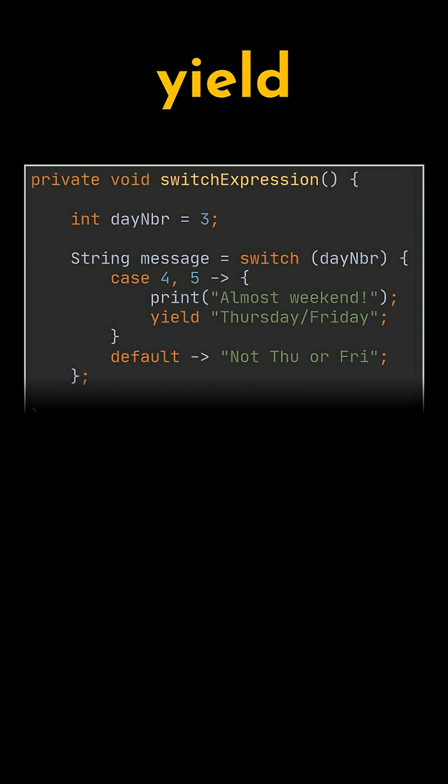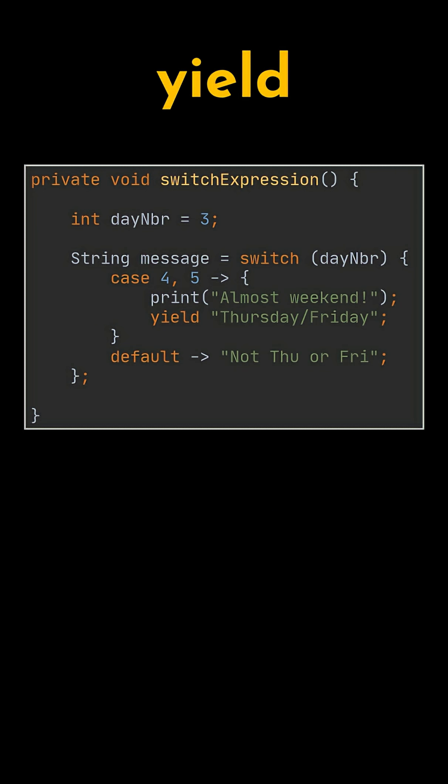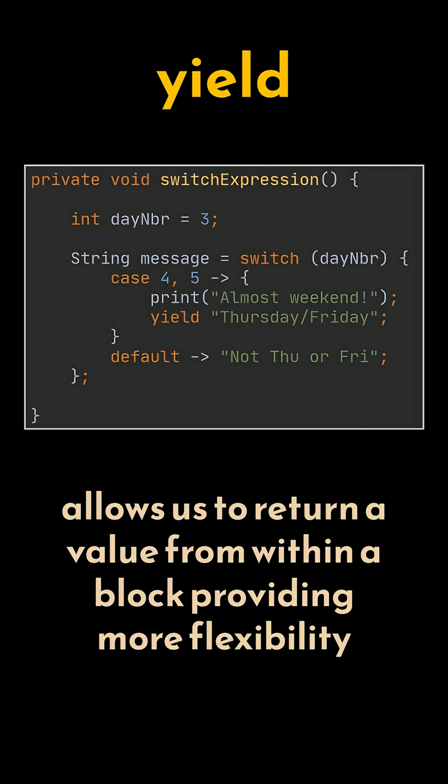Another useful feature of switch expressions is the introduction of the yield keyword. If we need to perform more complex logic for a case, we can write a code block and use yield to return the result. Yield allowed us to return a value from within a code block, providing more flexibility within switch expressions.